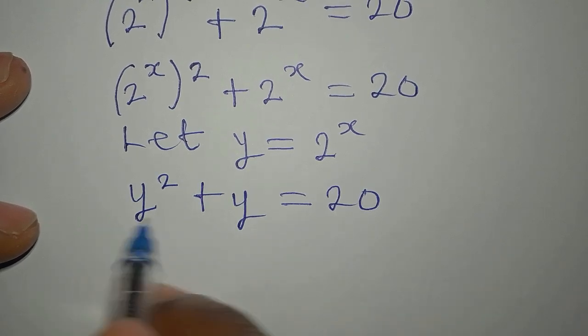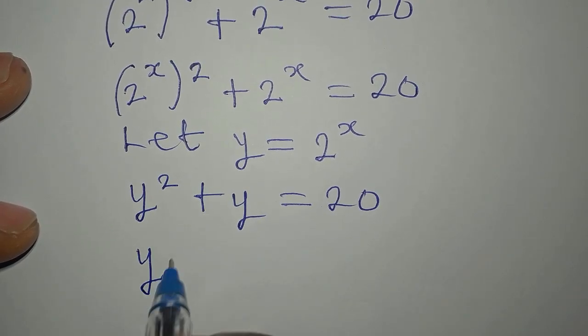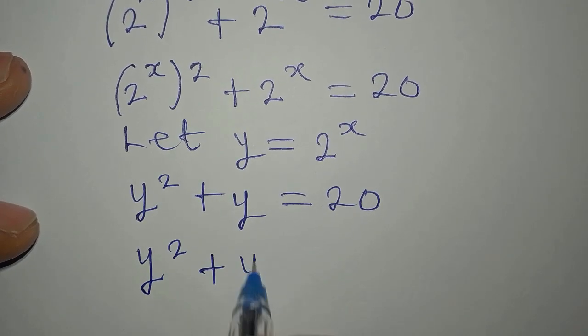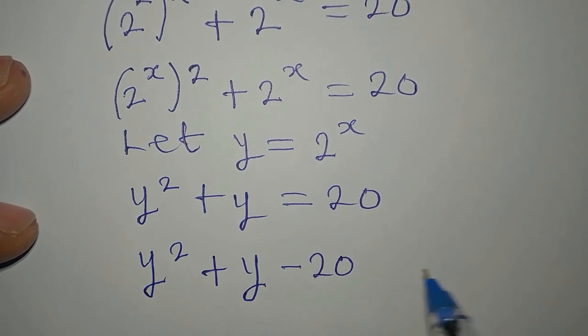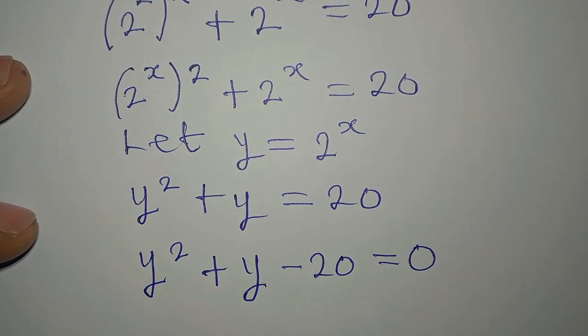From here now, we have y squared plus y minus 20 equals 0.